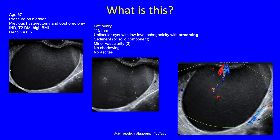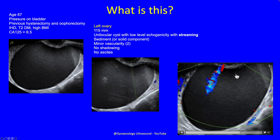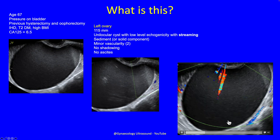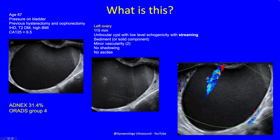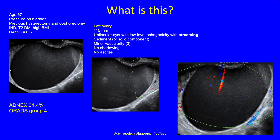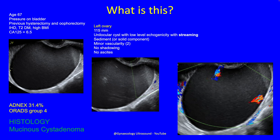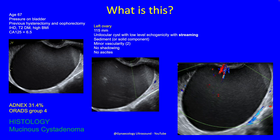Streaming is where you hold your probe still, put color Doppler on, and the energy of the color Doppler makes particles drift — you see that with blood and mucin. When we calculated ADNEX, this cyst came out as a risk of malignancy of 31%, and in the ORADS system this is a group 4 lesion. The histology was a mucinous cyst adenoma.